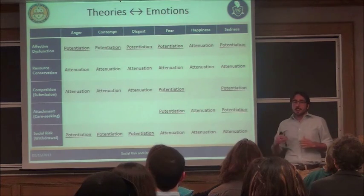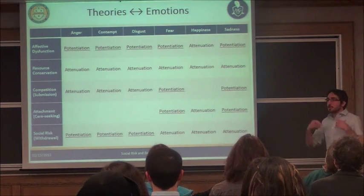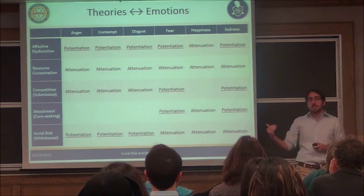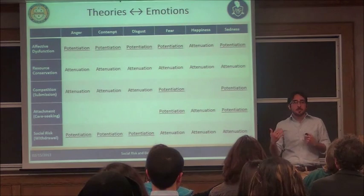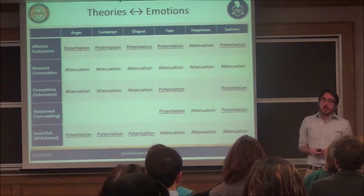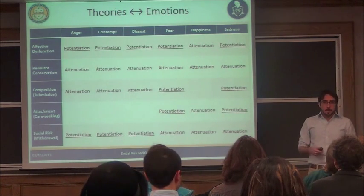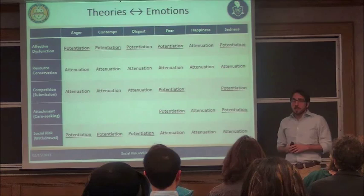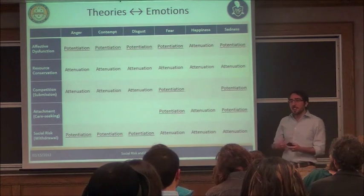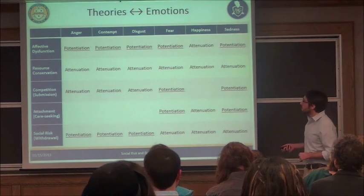We want to look at facial expressions across six discrete emotions — anger, contempt, disgust, fear, happiness, and sadness — and see whether predictions of different theories of depression match what we actually find. I'm going to talk about five evolutionary psychology theories of depression. It will be a bit simplified, but I can give more detail during the question period if you'd like.